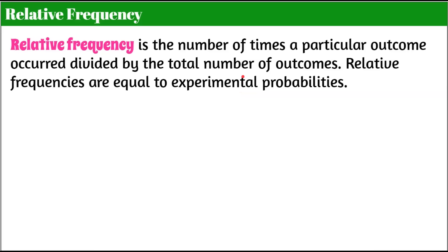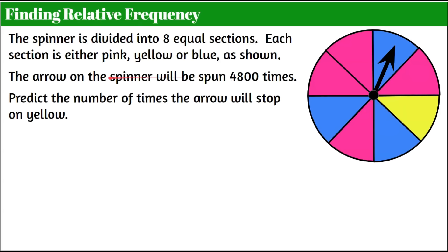Let's do a problem together on finding relative frequency using theoretical probability. We have a spinner divided into eight equal sections — a fair spinner. Each section is either pink, yellow, or blue as shown. The arrow on the spinner will be spun 4,800 times. We're going to predict the number of times the arrow will stop on yellow.